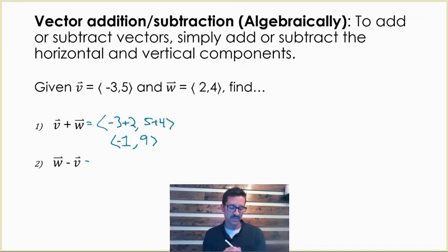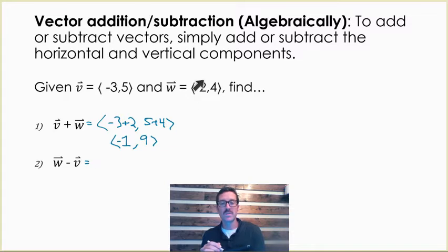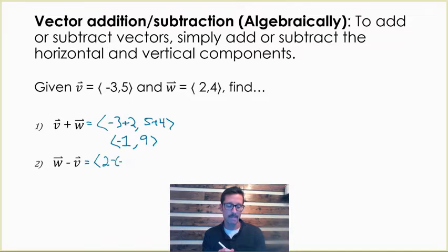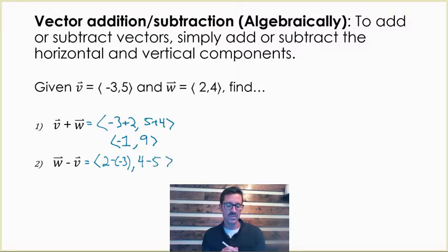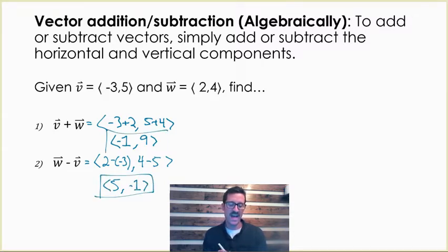Now let's subtract — we're doing vector W minus vector V. All I'm going to do is take vector W's horizontal component and subtract vector V's horizontal component. So I'm going to do 2 minus a negative 3, and for our vertical component we're going to do 4 minus 5. Our resultant vector in this case would be 5, because minus a negative 3 is plus 3, and negative 1. So that's how to add and subtract vectors algebraically.